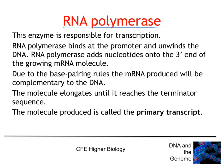The RNA polymerase adds nucleotides onto the three prime end of the mRNA molecule, similar to how DNA polymerase works — it can only add nucleotides onto the three prime end. The base pairing rules are the same, except that with mRNA, uracil pairs with adenine instead of thymine. The mRNA produced is complementary to the DNA, and the messenger RNA molecule elongates until it reaches the terminator sequence. The molecule produced is called the primary transcript.